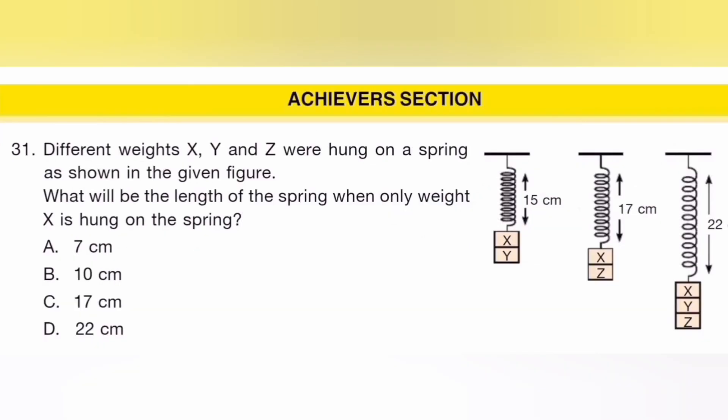Achiever section. Different weights X, Y, and Z were hanged on the spring as shown in the given figure. What will be the length of spring when weight X is hung on the spring? The answer is B, 10 kg.